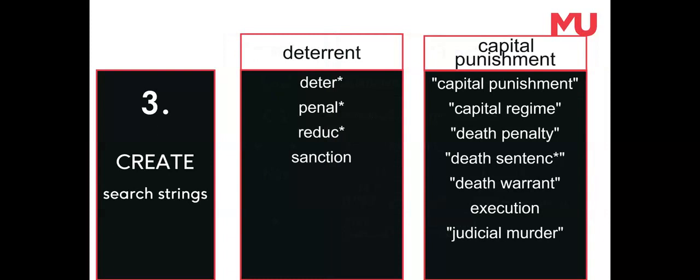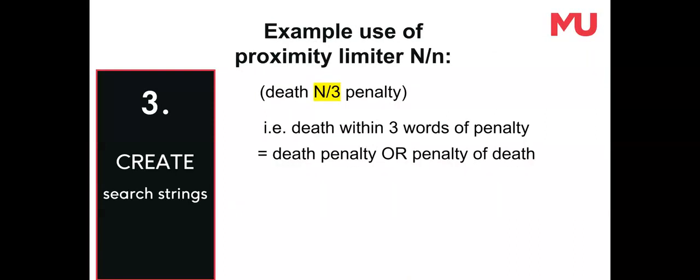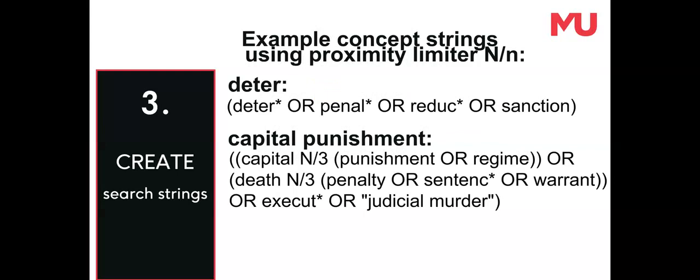Apply the truncation and phrase search operators to the search words. Next, create concept strings by combining the search words using the Boolean operator OR. Enclose each concept string within brackets. The proximity limiter can be used to search for words near each other in any order. Concept strings can be refined to create a more comprehensive search by using the proximity limiter.